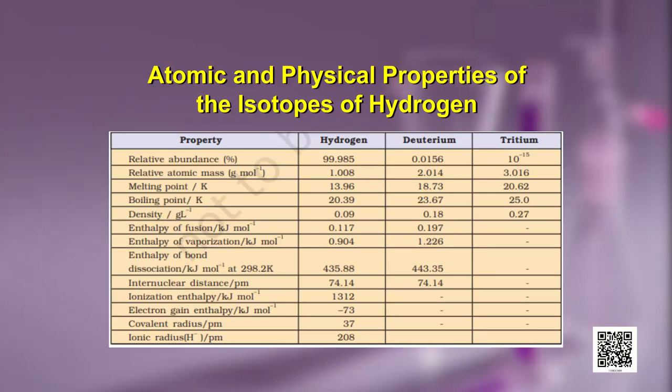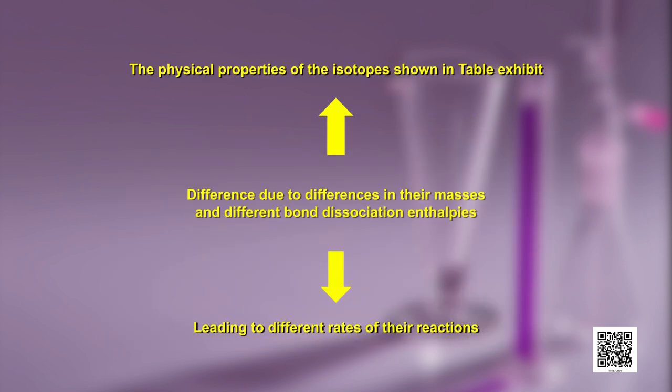If we talk about the physical properties of the isotopes — protium, deuterium, or tritium — we have tabulated them for you. You can see that since there are differences in their masses, this leads to differences in their bond dissociation enthalpies as well. That is why these isotopes react at different rates in their reactions. Looking closely at the table, the masses of the isotopes are different, their ionization enthalpies are different, their densities are different, and as we move from hydrogen to deuterium to tritium, as mass increases, certain properties are in increasing order.